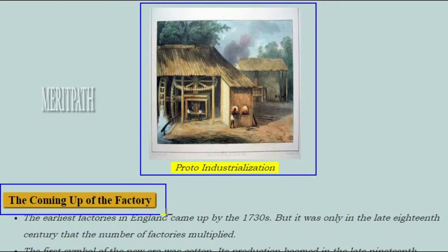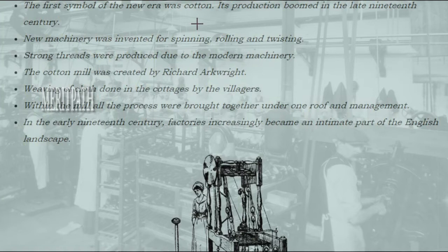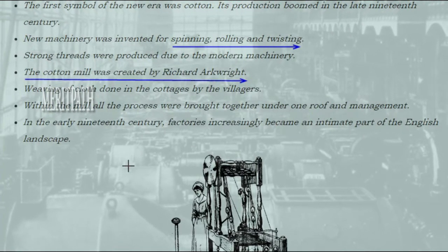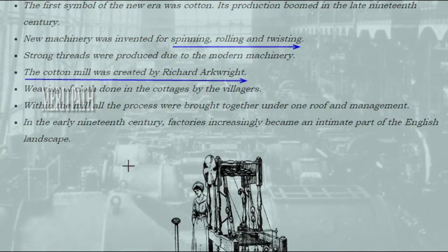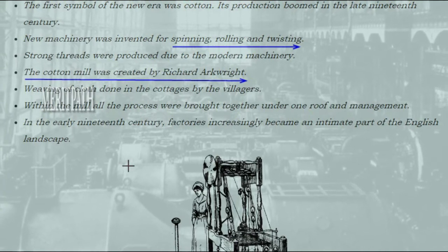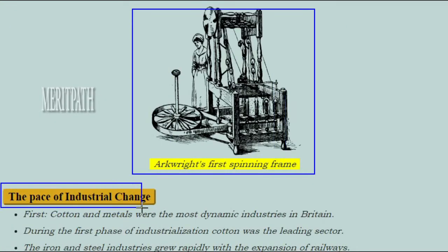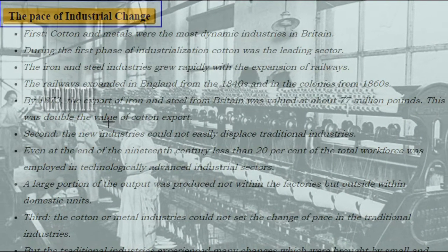Now we'll see the coming up of factories in Europe. The earliest factories in England came up by the 1730s, but it was only in the late 18th century that the number of factories multiplied. The first symbol of the new era was cotton — its production boomed in the late 19th century. New machinery was invented for spinning, rolling and twisting, and strong threads were produced due to modern machinery. The cotton mill was created by Richard Arkwright. Weaving, a process done in cottages by villagers, was now brought together under one roof and management. In the early 19th century, factories increasingly became an intimate part of the English landscape. Cotton and metals were the most dynamic industries in Britain.